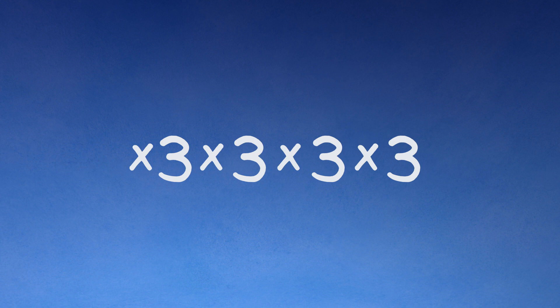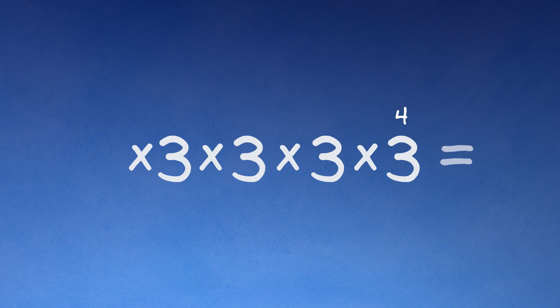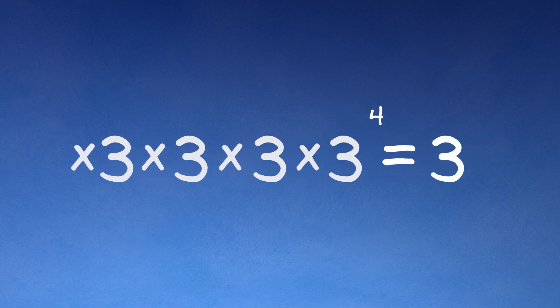We saw that we can describe repeating multiplication with an exponent. Multiplying three by itself four times can be written with an exponent as three to the fourth power. But what if we had an exponent three to the power of zero? Looking at the symbols, it may not be apparent what that even means. What is three times itself zero times?